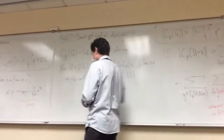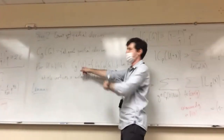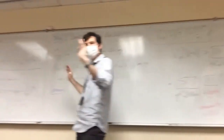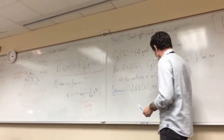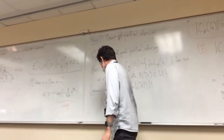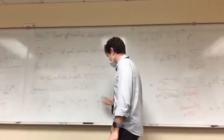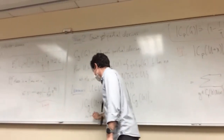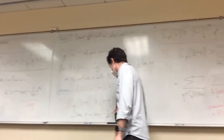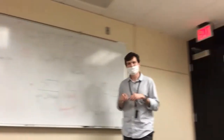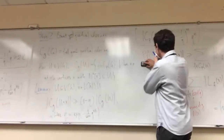Now the lemma: the set C_G(U) is defined so that larger U means more constraints. The lemma says that if U is a subset of vertices and x is not in U, then |C_G(U ∪ {x})| is at least (1 - eta) * |C_G(U)|, where eta is something exponentially small. So the size shrinks when you add vertices, but only by this tiny factor close to one.